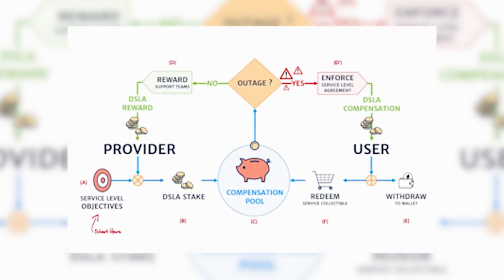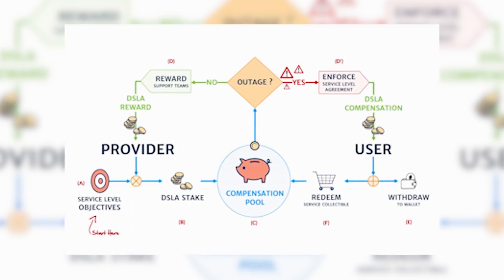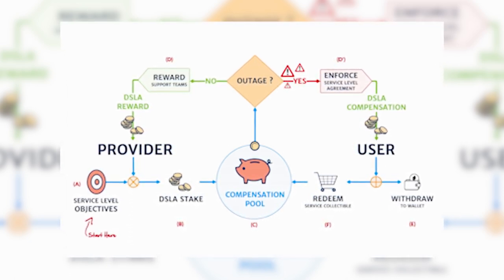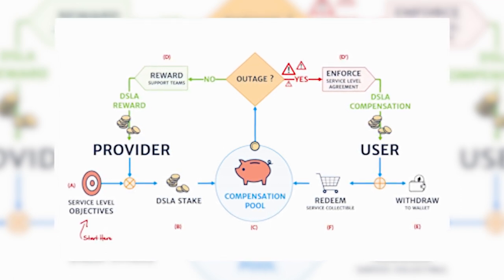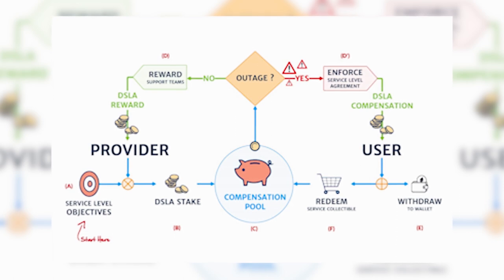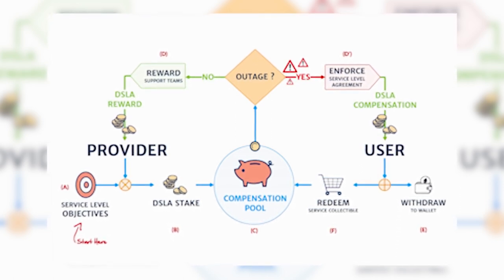If they do not reach their goals, for example, if a site is down for too long, the tokens will go to their users instead. Users could then withdraw their tokens or exchange them for collectibles and promotional offers on the Stacktical marketplace.